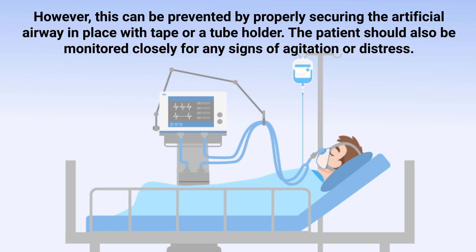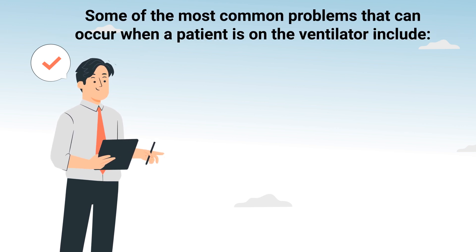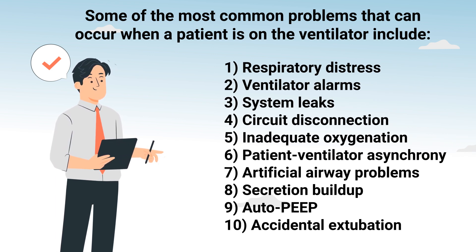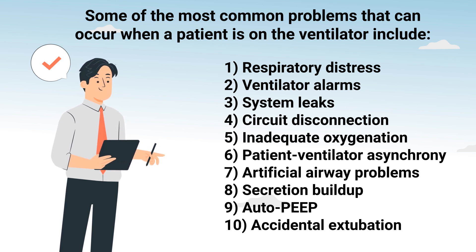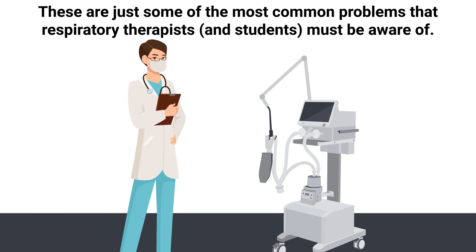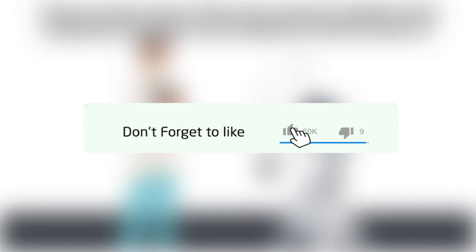The patient should also be monitored closely for any signs of agitation or distress. To give a quick recap, some of the most common problems that can occur when a patient is on the ventilator include: respiratory distress, ventilator alarms, system leaks, circuit disconnection, inadequate oxygenation, patient-ventilator asynchrony, artificial airway problems, secretion buildup, auto-PEEP, and accidental extubation — just to name a few. There are many other problems that can arise depending on the ventilator mode, settings, artificial airway, or the patient's condition. These are the most common problems that respiratory therapists and students must be aware of.